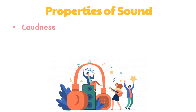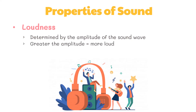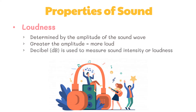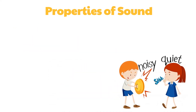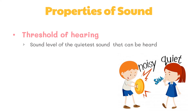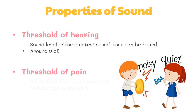The loudness of sound is determined mainly by the amplitude of the sound wave. The greater the amplitude of the sound wave that reaches your eardrums, the greater the perceived loudness of sound. Decibel is the unit used to measure sound intensity or loudness. We are normally exposed to a range of sounds from 0 dB to about 120 dB. The threshold of hearing is the sound level of the quietest sound that can be heard under ideal conditions, which is around 0 dB. The threshold of pain is the sound level which can cause pain and damage to the ears, and is around 120 dB.